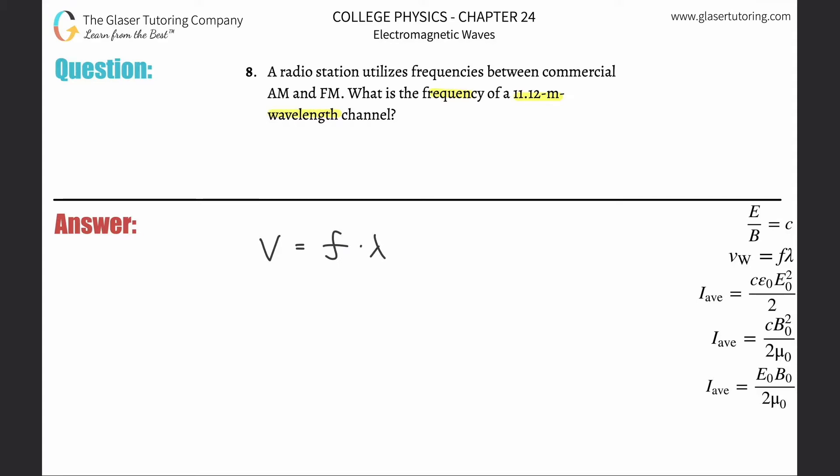Now since AM and FM are types of electromagnetic waves, we can use the value of the speed of light here. We are assuming that these waves are traveling in a vacuum, in the vacuum of space. So that's why we're going to use the value of 3 times 10 to the 8. It doesn't say otherwise, so we have to assume that.